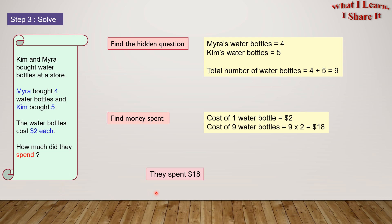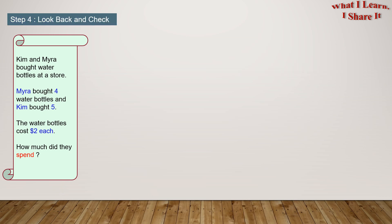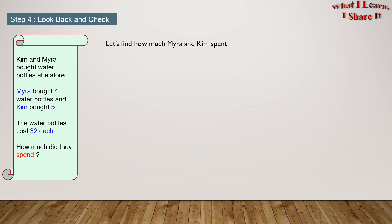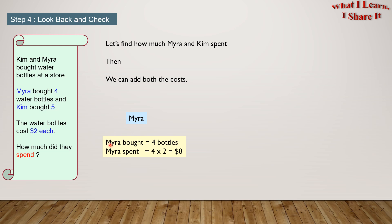They spent $18. Step four: Look back and check. Now let's use another way to solve. Let's find out how much Myra and Kim each spent, then add both costs. Myra bought four bottles and spent four times two, which equals $8. Kim bought five bottles and spent five times two, which equals $10.